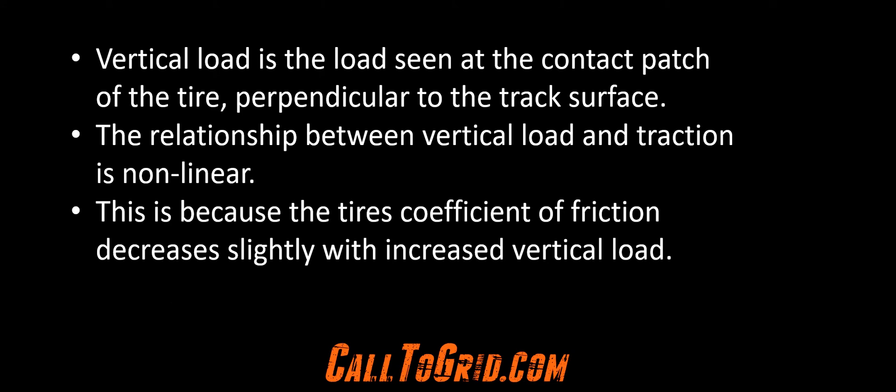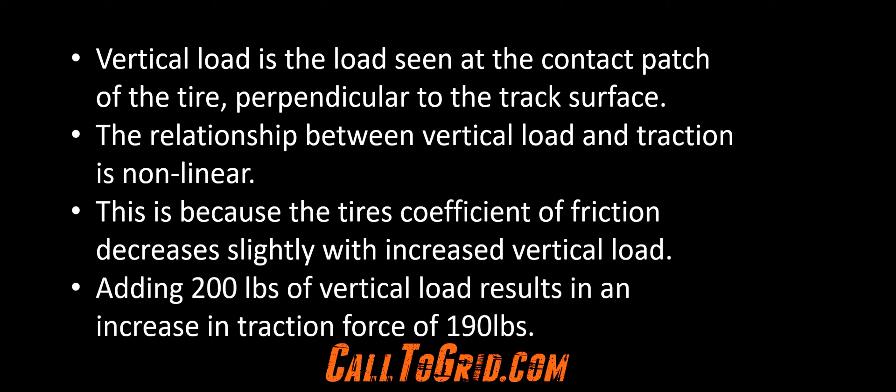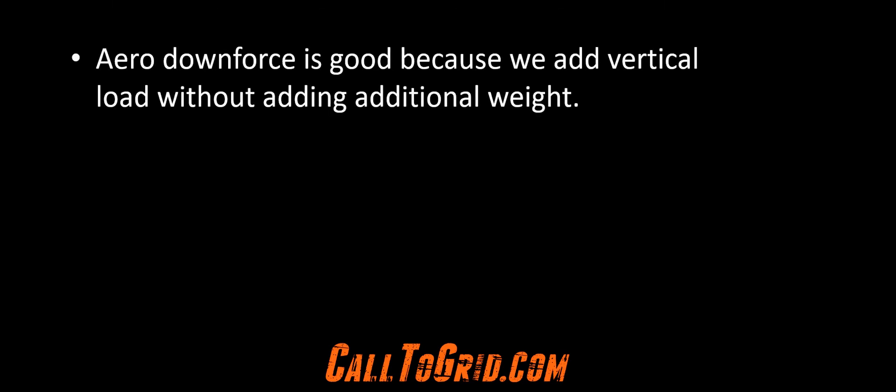If we add 800 pounds to the weight of a car with 200 pounds of increased vertical load at each tire, it is obvious the car won't accelerate as fast with the engine and horsepower remaining the same. Also, this additional 200 pounds of vertical load to the tire does not mean 200 pounds of cornering force. Because of the drop in the coefficient of friction, only about 190 pounds of cornering force will be generated.